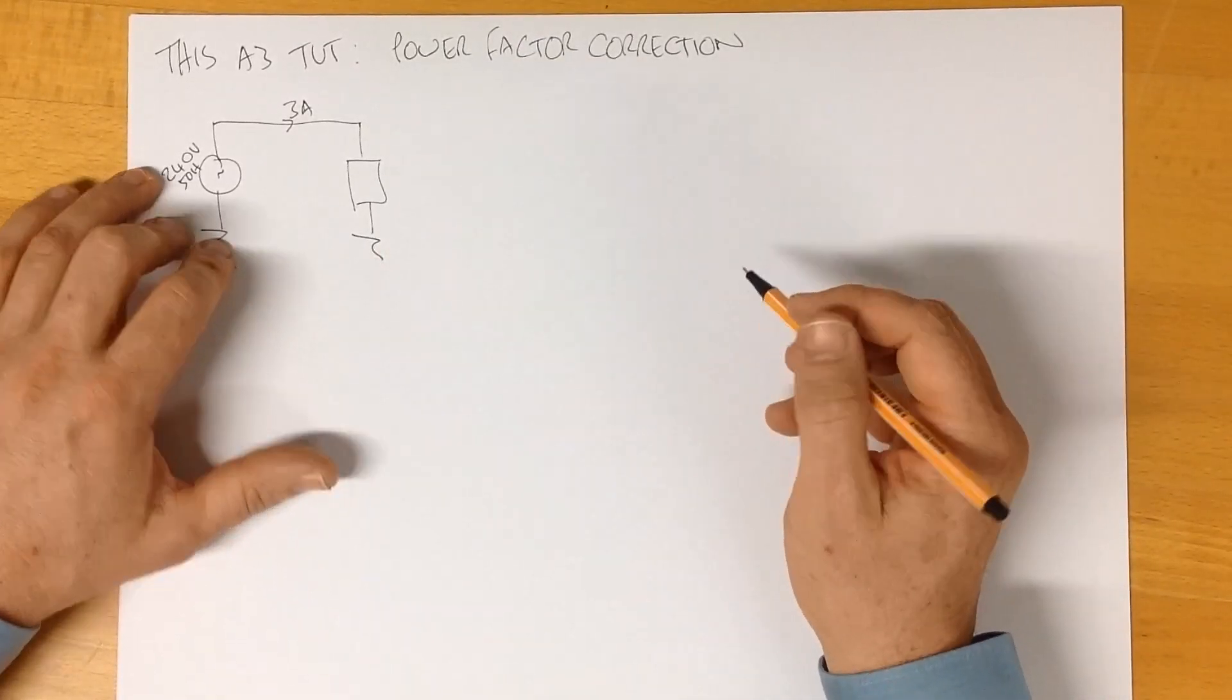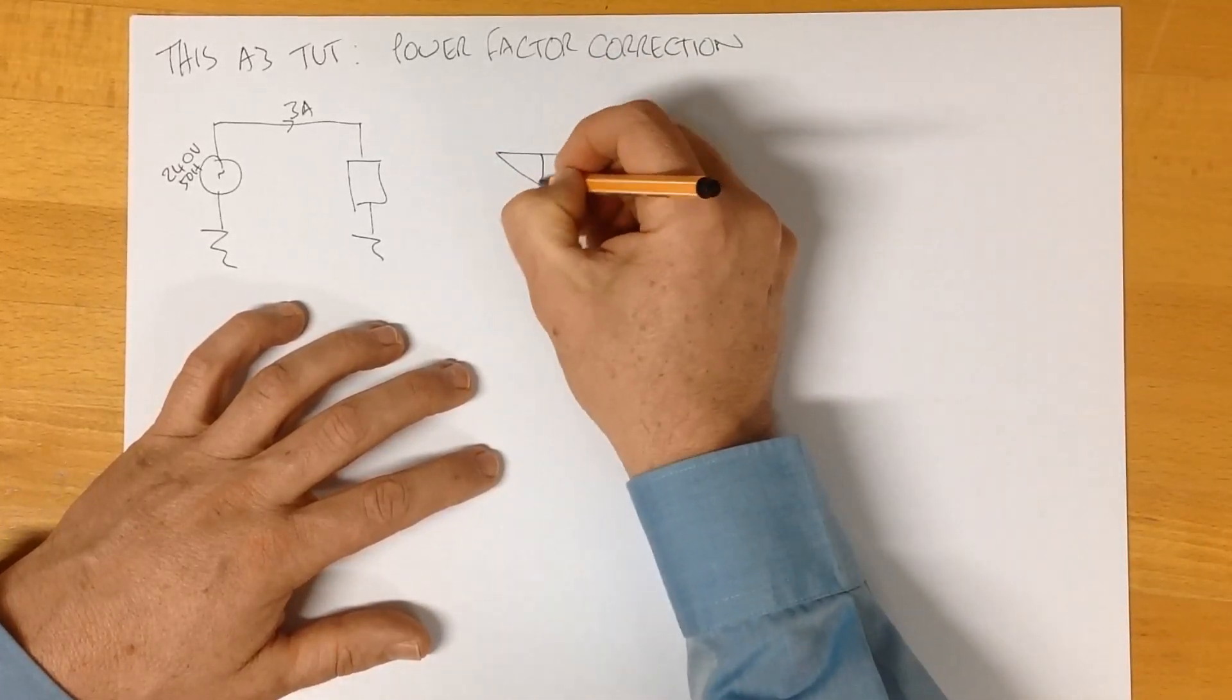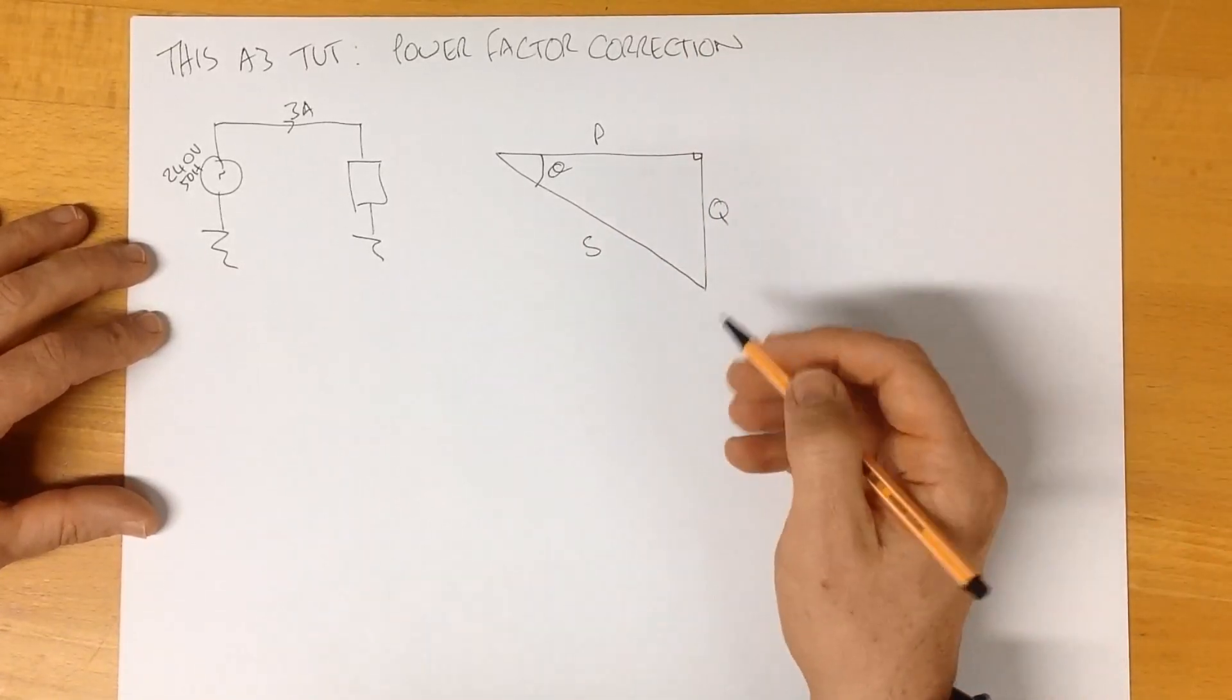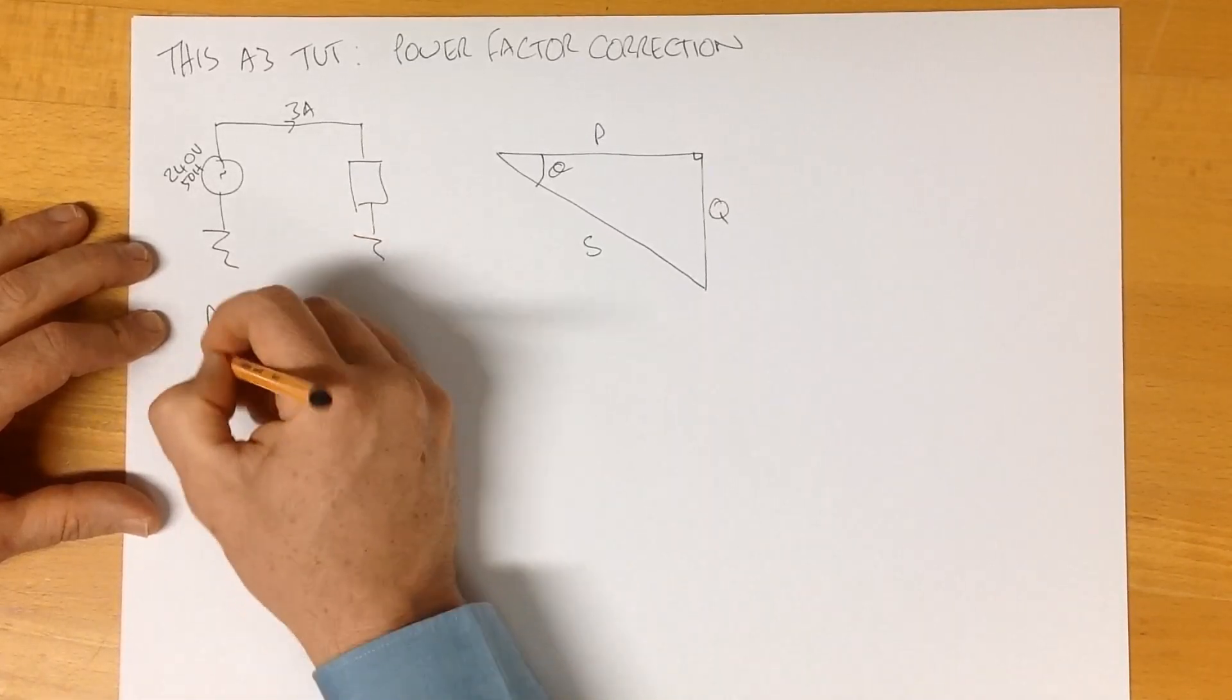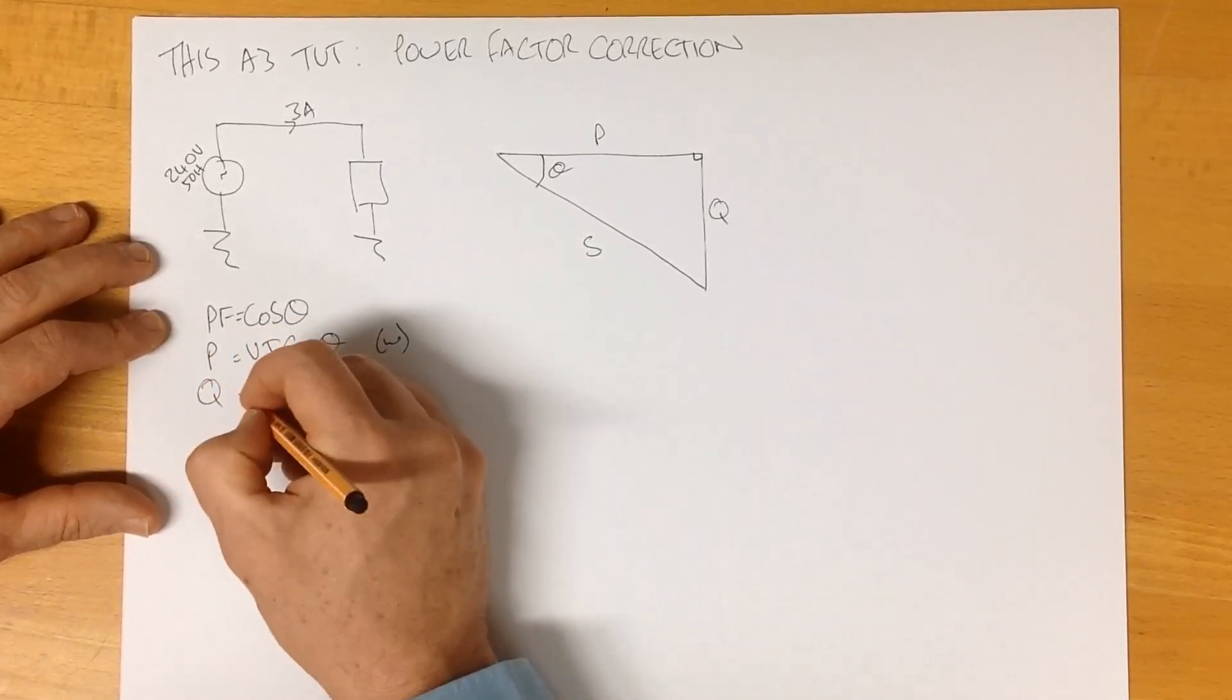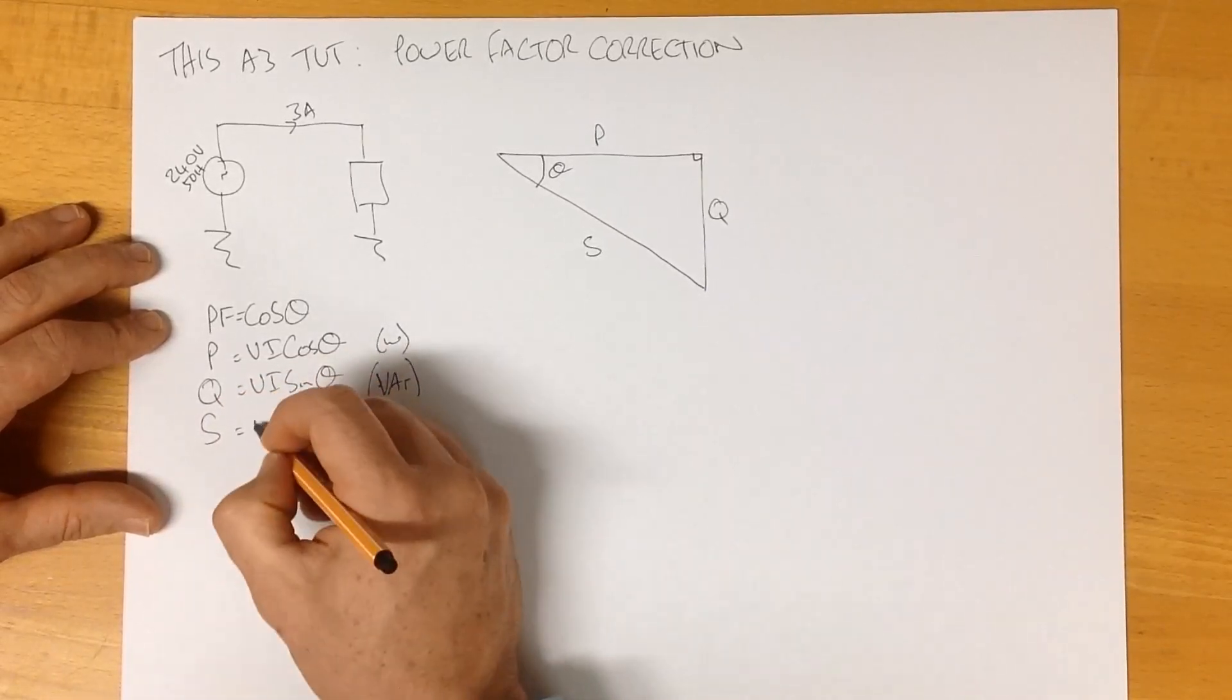So this is the schematic. We need to understand the system from a power engineering point of view, and the easiest way of doing that is to represent it as a power triangle. And there's our triangle, where this is our angle theta, our real power is here, our apparent power is here, and our reactive power is there. We can take some existing knowledge into this. We know that the power factor is the cosine of that angle. The real power is the voltage times the current times the cosine of the angle, and that's in watts. The reactive power is Vi sine theta, and the unit for that is VARs, or volt amp reactive. And the apparent power, S, is simply Vi.